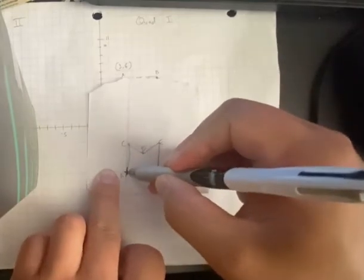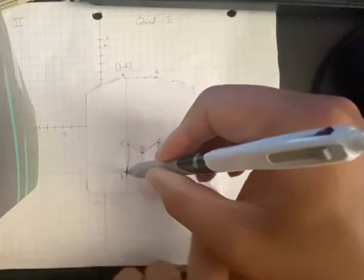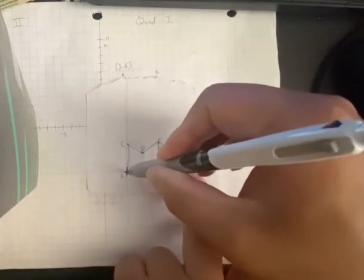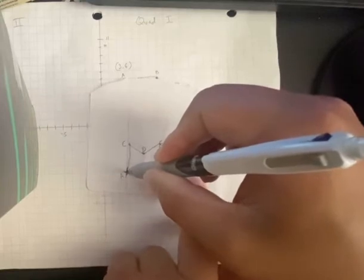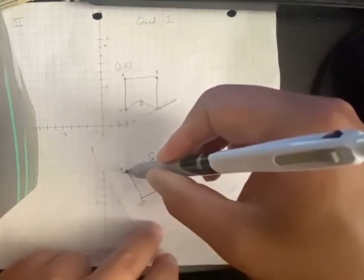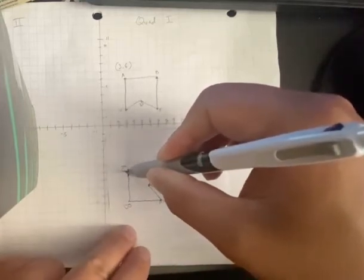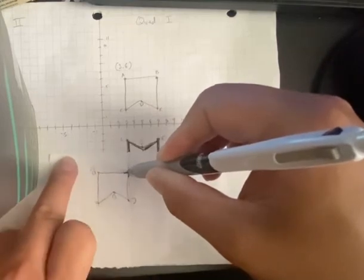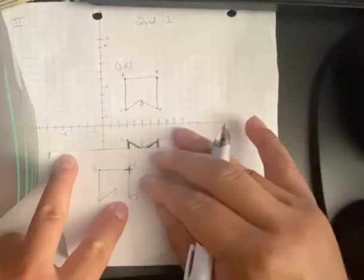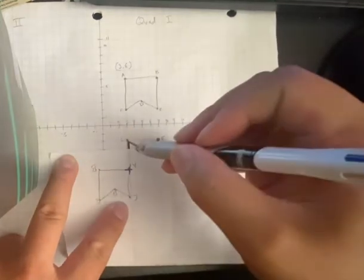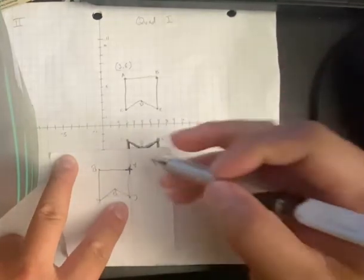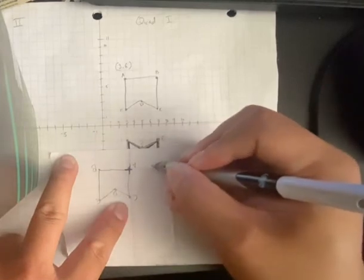So I'm gonna rotate my shape 90 degrees, 180 degrees clockwise. Clockwise is to the right. So that's 90, and here's 180.